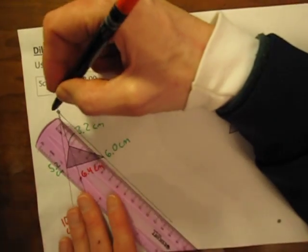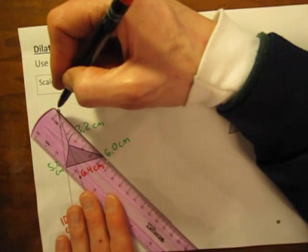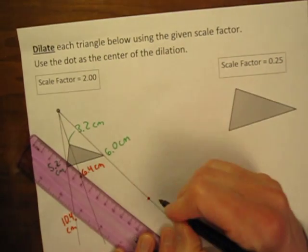And the last one was originally 6 cm away from the center of the dilation. Now it is 12, because 6 times 2 is 12.